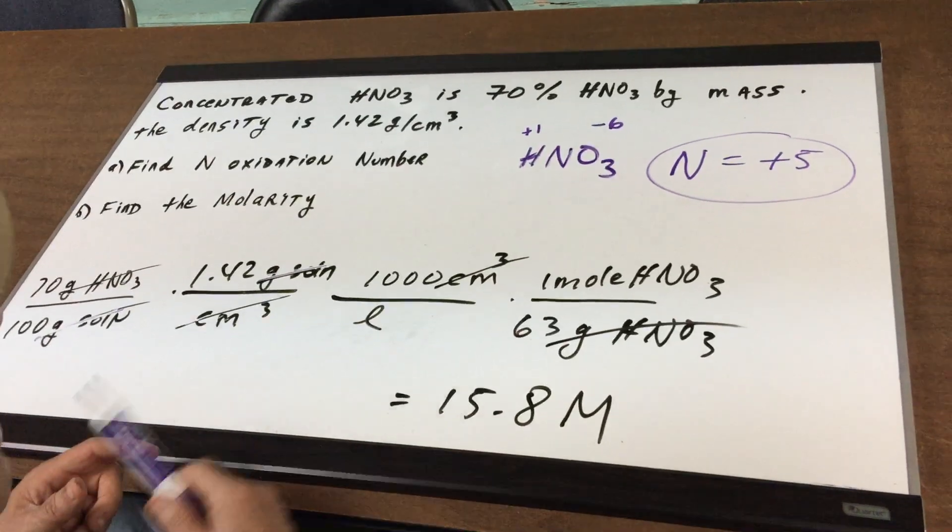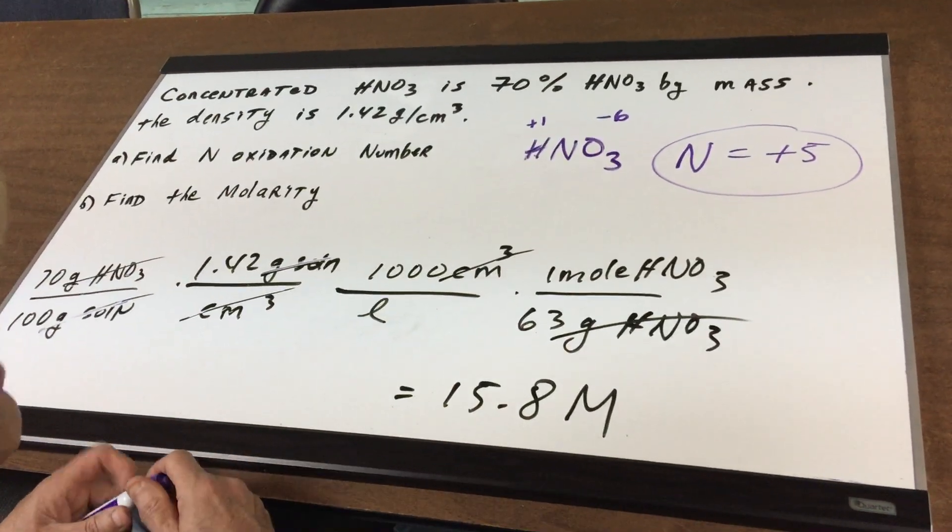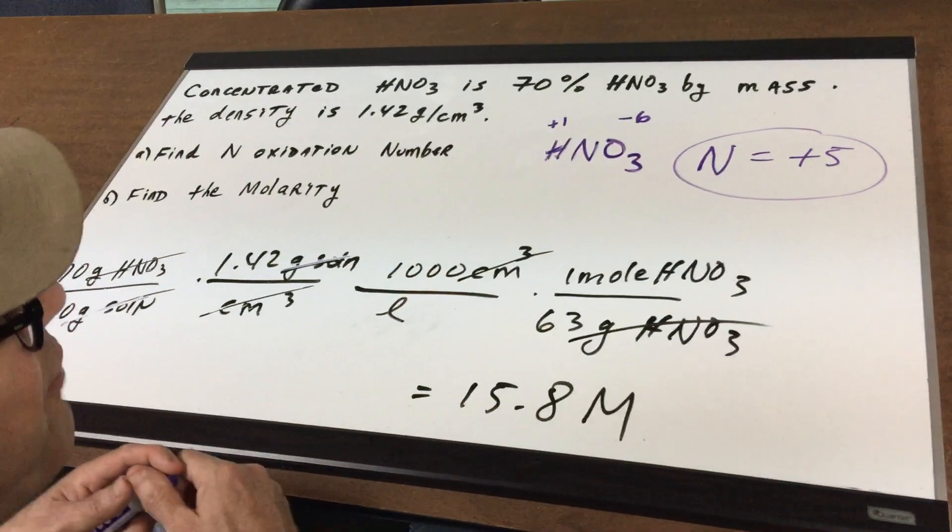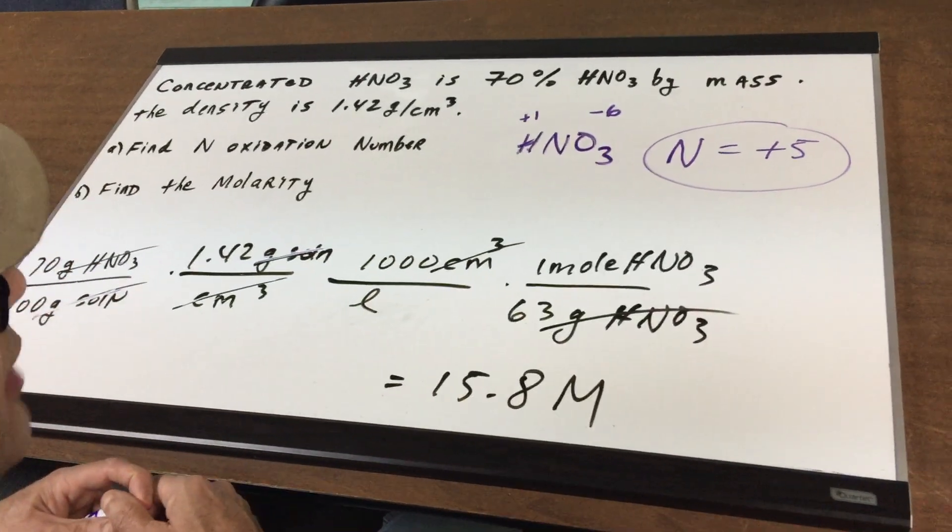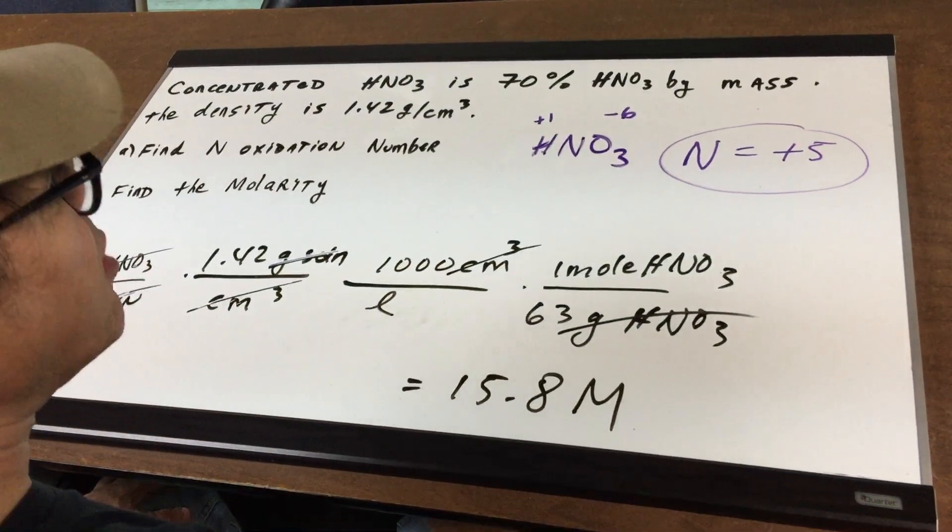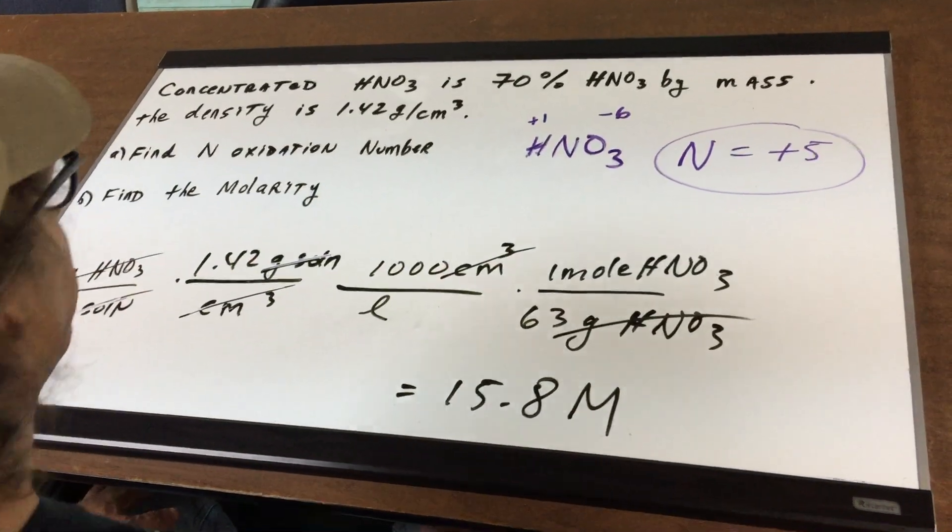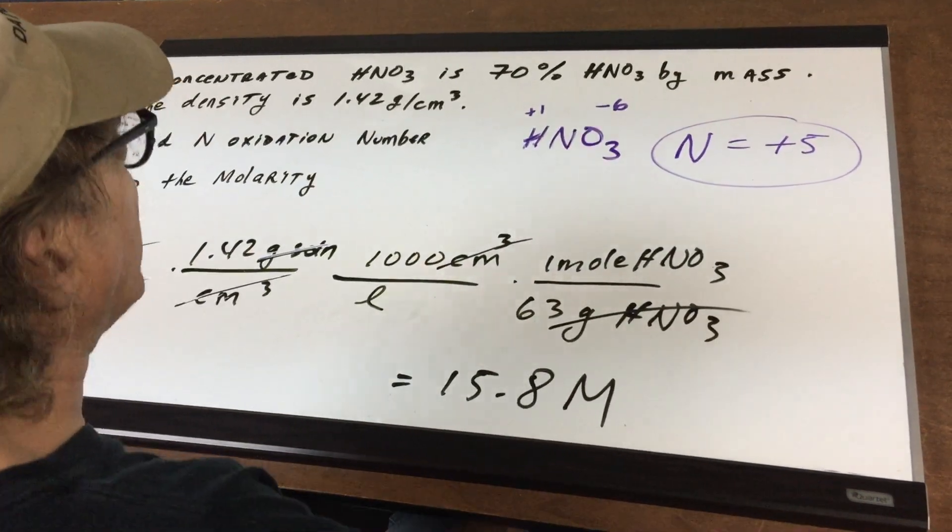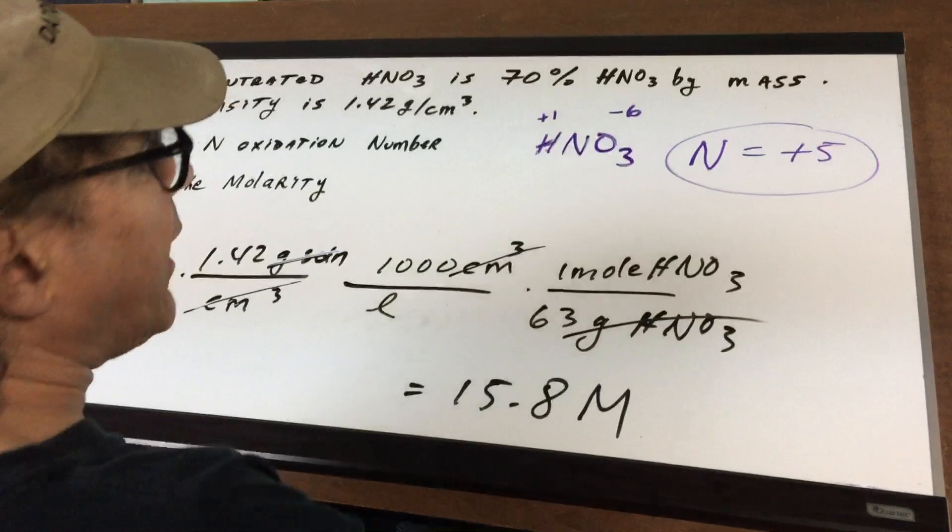We have a similar question in the DAT Destroyer book that I want you to have a look at, where the numbers are very nice and easy to work with like you'll see on the DAT. I hope this helps and gives you a good idea of how to go about a more challenging question on molarity. Good day to you.